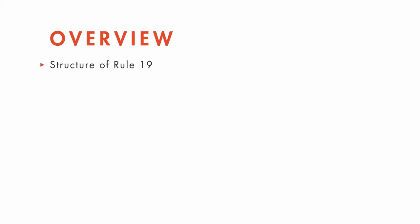First, we'll talk about the structure of Rule 19. Then we'll talk about necessary parties, who must be joined to the case if joinder is feasible.